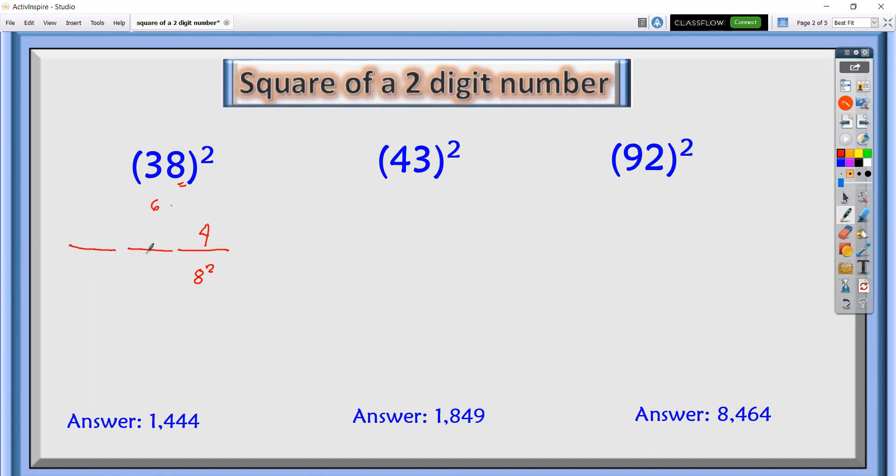Next, for the middle term or middle number, we will multiply 3 times 8 times 2. We have 3 times 8 times 2. So this is 64. 3 times 8 times 2, it's 24 times 2, it's 48. 48 plus 6, we have 54, carry 5.